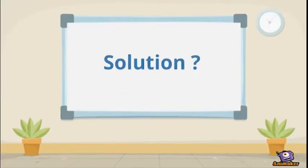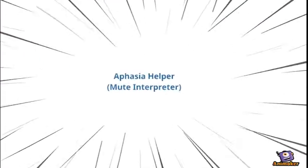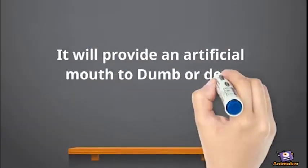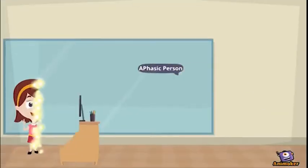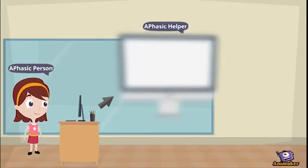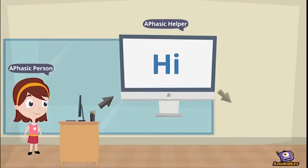So what kind of solution is required for this communication barrier? Here is the proposed solution: the Aphasia Helper. It will provide an artificial mouth to deaf or dumb persons. Aphasia Helper works like an interpreter — it will convert aphasic signs into text, enabling both of them to communicate with each other.